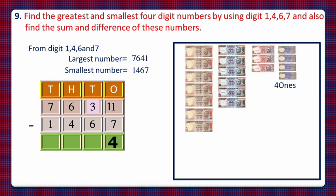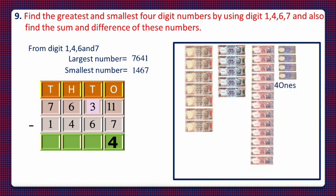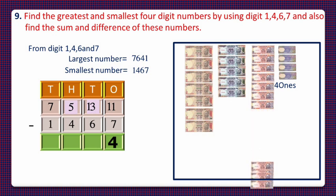Now to subtract 6 from 3 tens, we'll convert a 100-rupee note into 10 ten-rupee notes, so tens become 13 and hundreds reduce from 6 to 5. On subtracting 6 from 13 we are left with 7 tens, so we'll write 7 in the tens column.